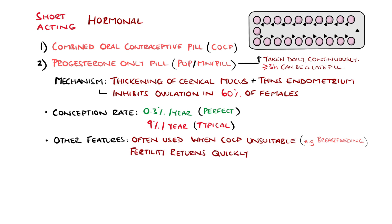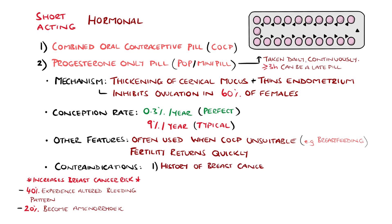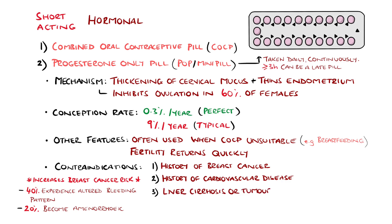Like the combined pill, fertility tends to return quickly. It does, however, have its own disadvantages. These include an increased risk of breast cancer and ovarian cysts. It can also cause altered bleeding patterns in around 40% of cases, and amenorrhea in 20%. Contraindications include breast cancer, history of cardiovascular disease including stroke or diabetes with vascular disease, liver cirrhosis or tumours, and it is less effective in those over 70 kilos.